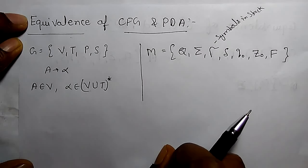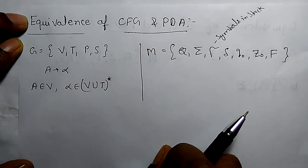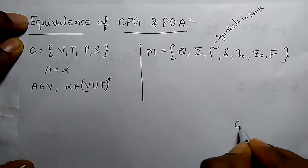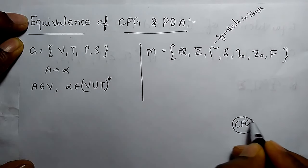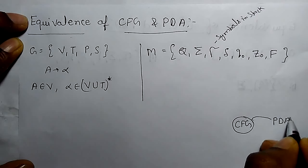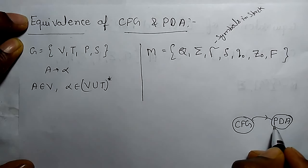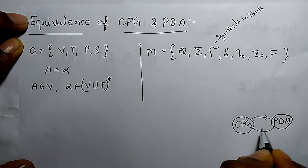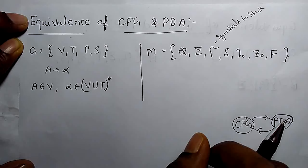Today we are going to learn the equivalence of CFG and PDA. If there is a context free grammar and we prove there is an equivalent pushdown automata for that grammar, then these are equivalent. Similarly, if there is a PDA and we prove there is a grammar equivalent to that PDA, that is also equivalence.